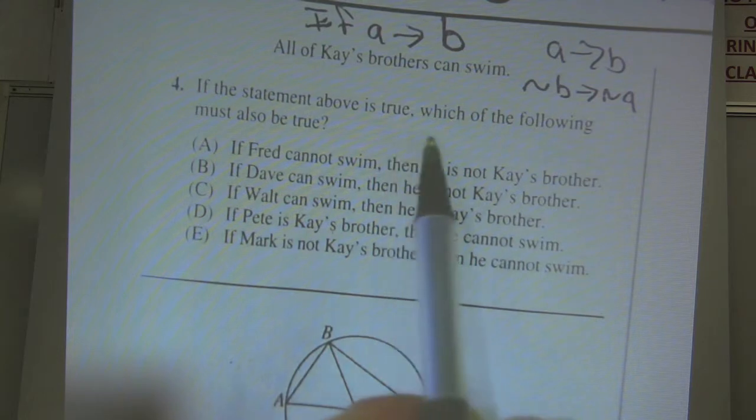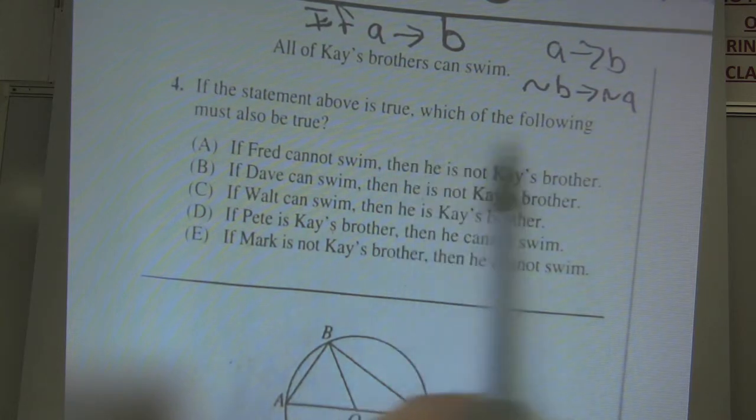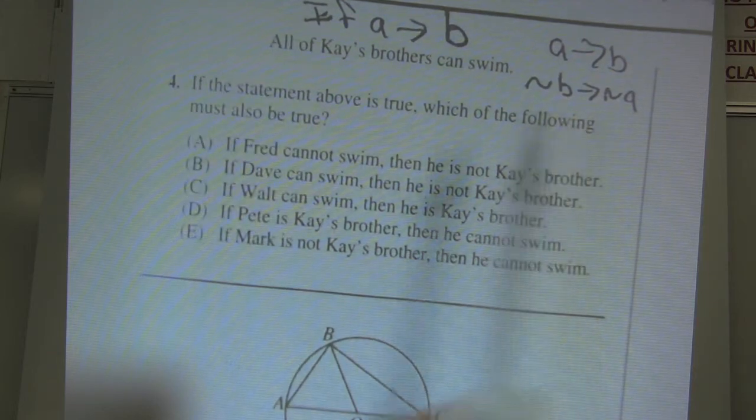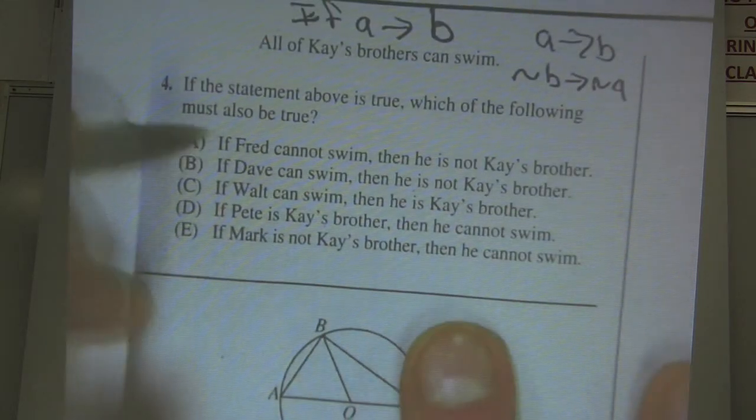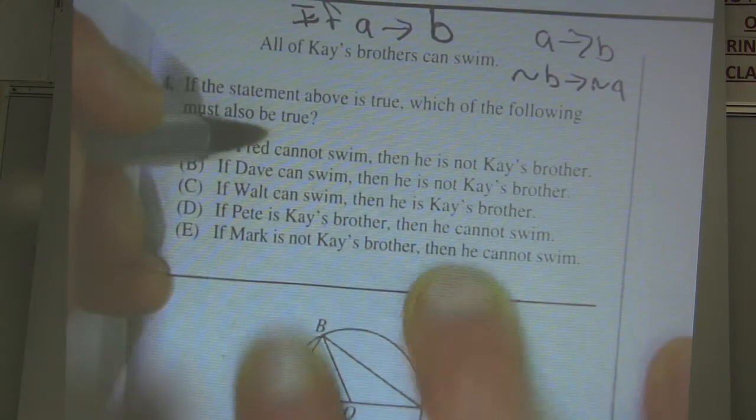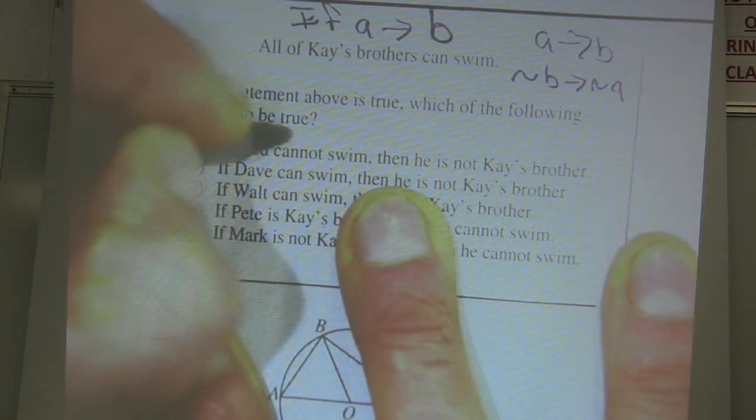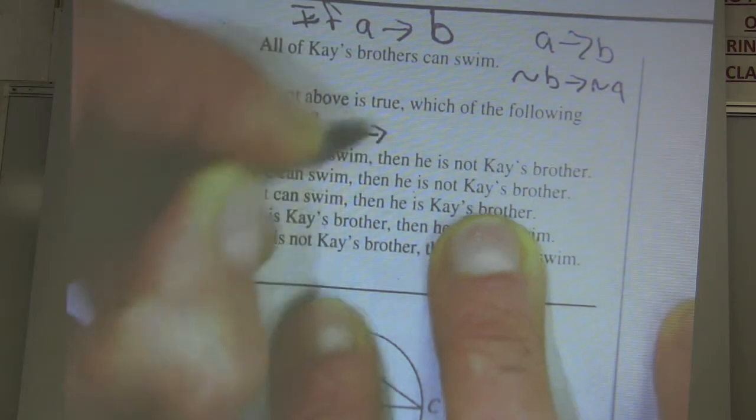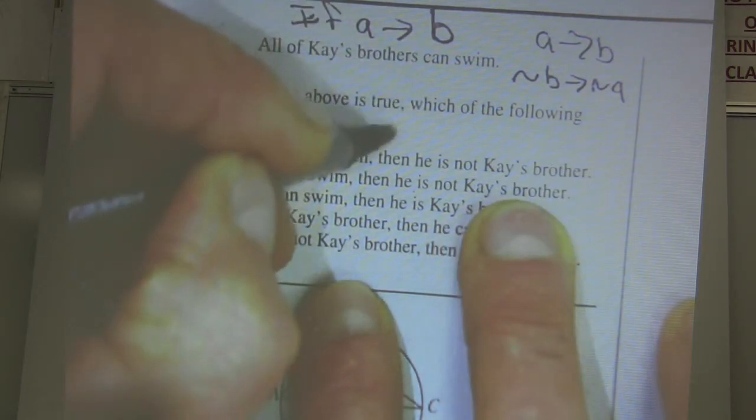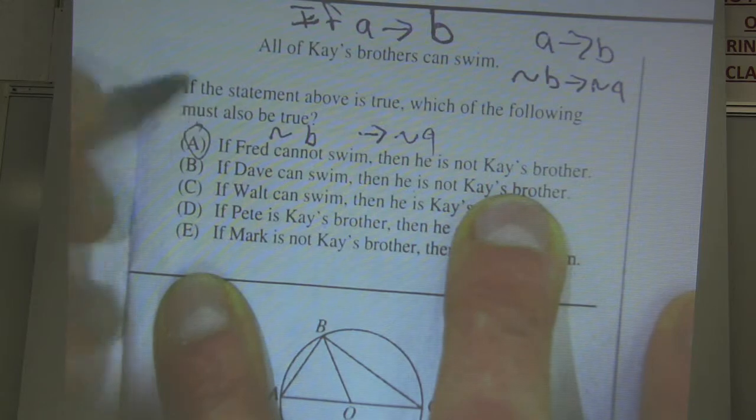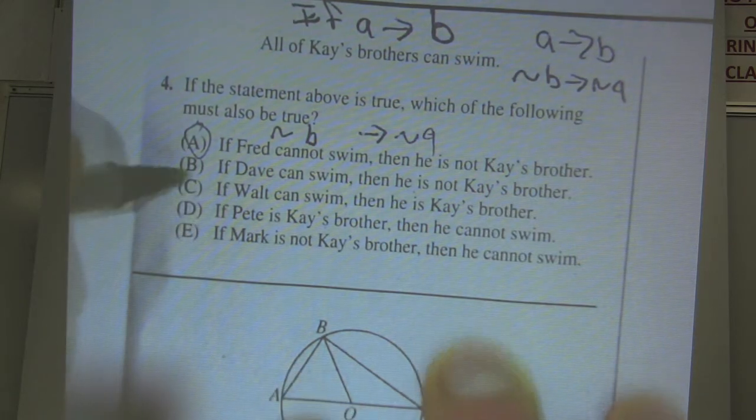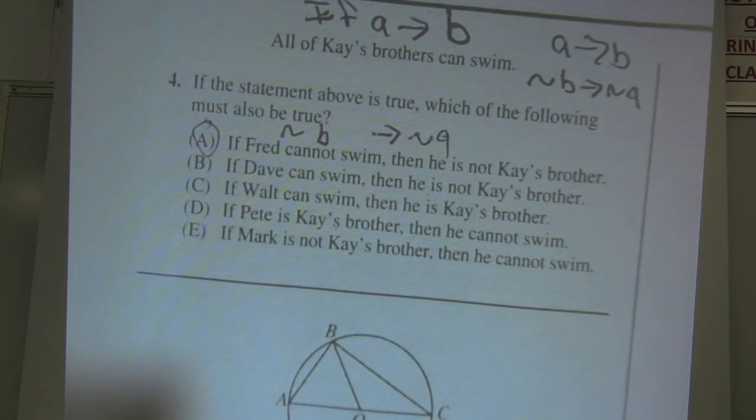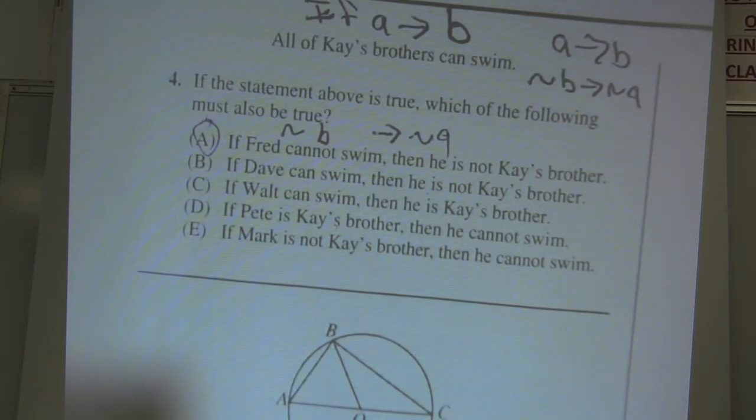So let's go. If the statement above is true, which of the following must be true? Remember, this is the only way it can be true, is if it goes in this pattern right here. A, if Fred cannot swim, that is not B, looking good. If it goes to not A, I'm done. Then it is not K's brother. Well, that's not A. There it is. It's choice A. All these other ones either start off with B, or they start off with not A, and therefore it wouldn't be logical.